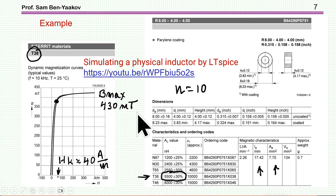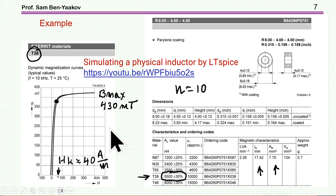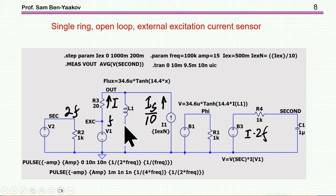I'm going to simulate such a circuit by considering this ferrite toroid, which was used in the previous Part 1 video. We have the BH curve showing saturation, and these are the dimensions used to extract the equation representing the flux for the LT Spice simulation. This is the equation that describes the flux — this is the non-linear inductor from the previous video.